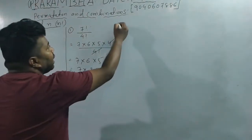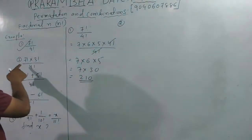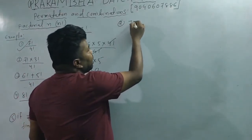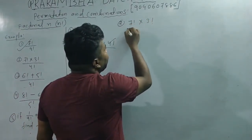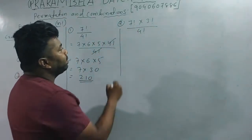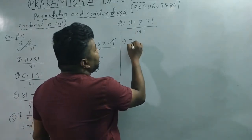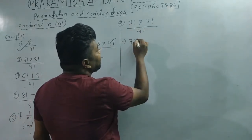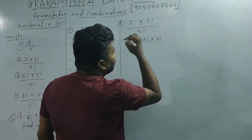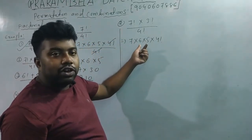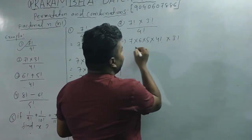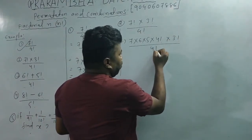Second question: 7 factorial × 3 factorial divided by 4 factorial. So we expand 7 factorial as 7 × 6 × 5 × 4 factorial, multiplied by 3 factorial, divided by 4 factorial. The 4 factorial terms cancel.